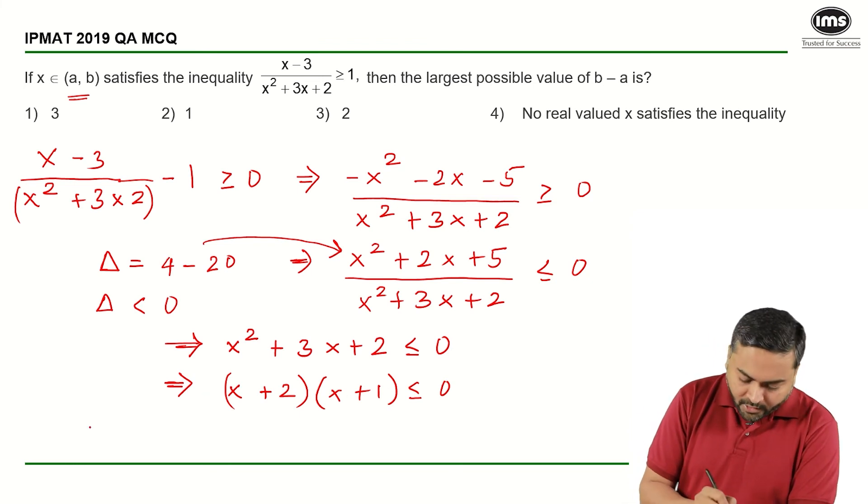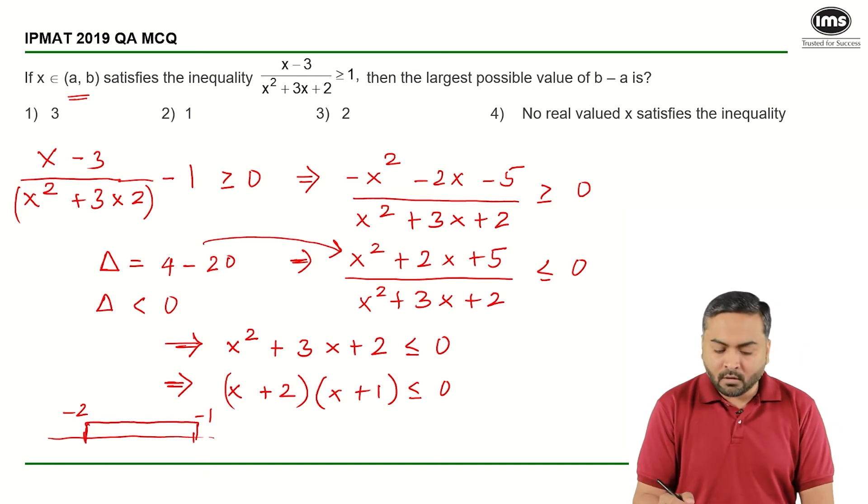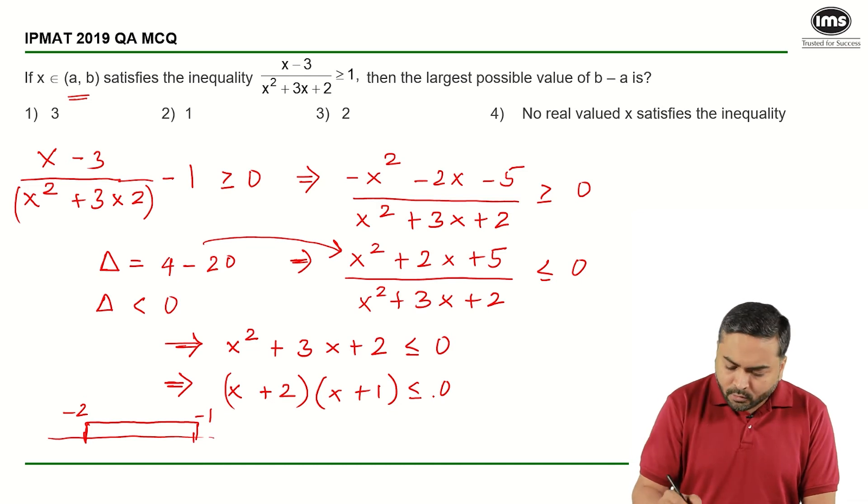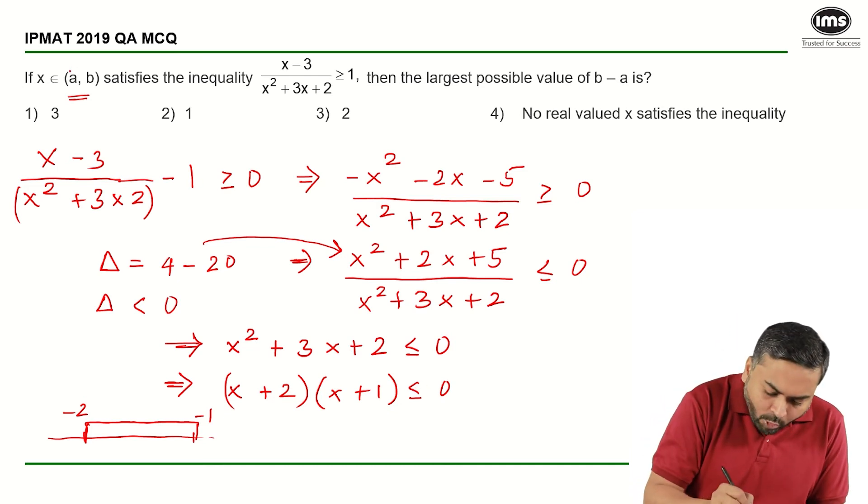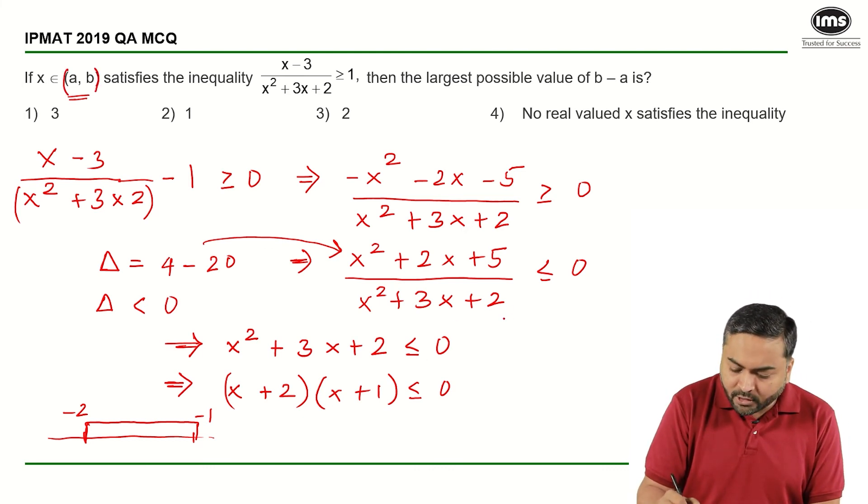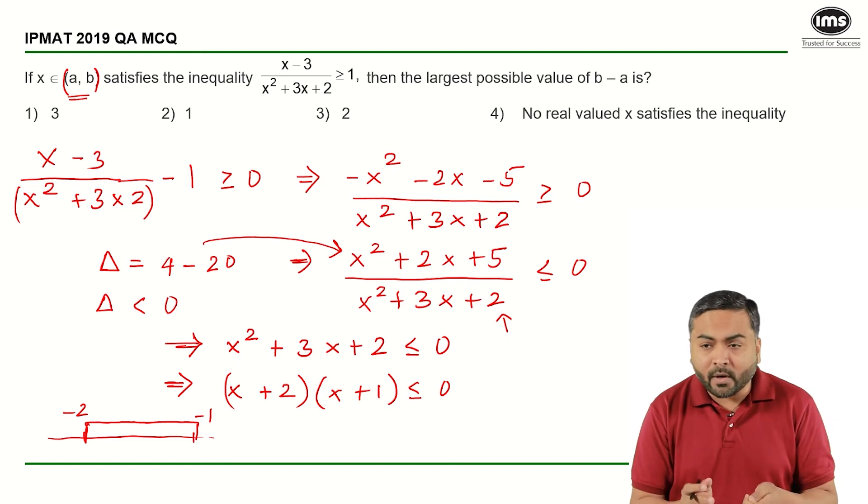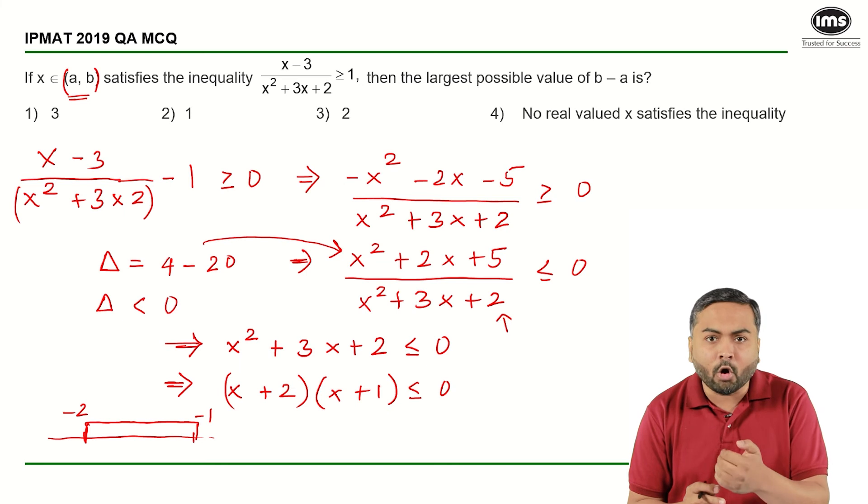So if you try to plot the inequalities here, the value here is -2 and -1, and since it is less than, it is between -2 and -1. And here you may say it has an equal to sign, but there is a round bracket here, that is because this particular expression is in denominator and denominator cannot be equal to 0. So x will be between -2 and -1, it will not be equal to -2 or -1.